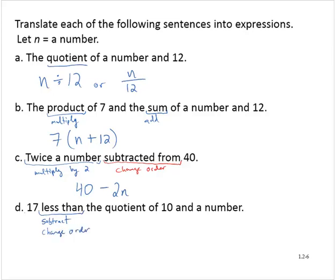So we're going to have 17 less than. We're subtracting the 17 from the quotient of 10 and a number. So there's a division. The quotient of 10 and a number is 10 divided by n, and then 17 less than that.